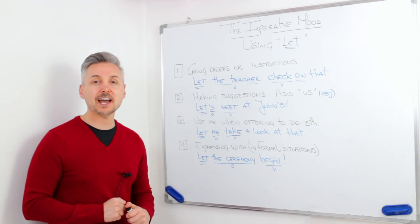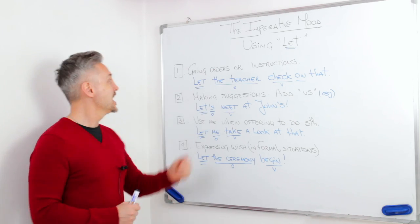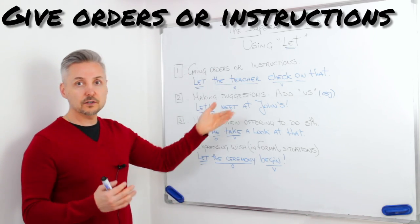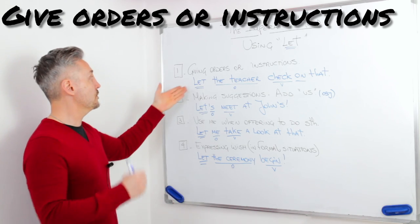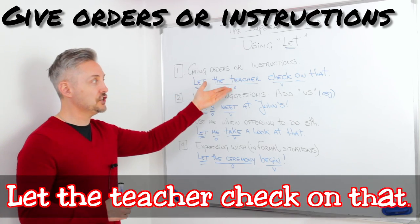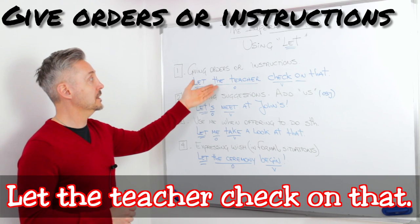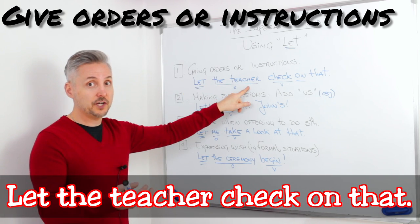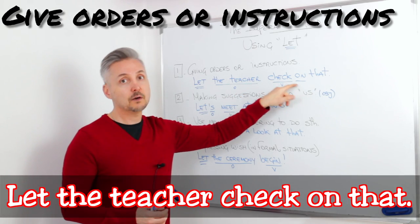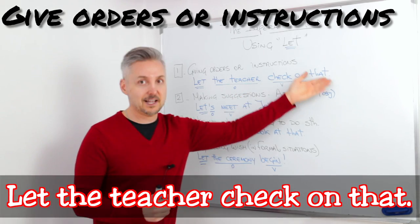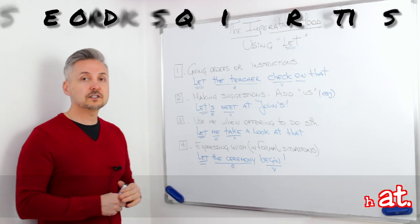Right, so we're back with let's. Now, in the first situation, we give orders or instructions. So, for example, let the teacher check on that. Let would be the verb. Then, the teacher is the object. Check on would be the verb, also that.